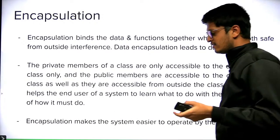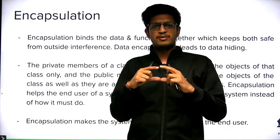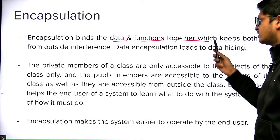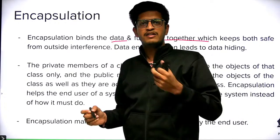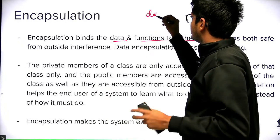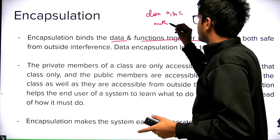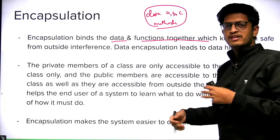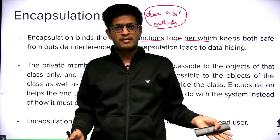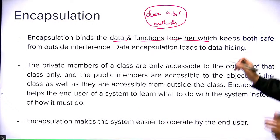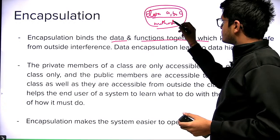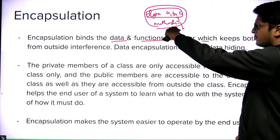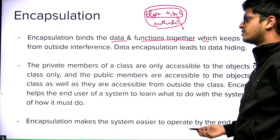Let's look at encapsulation. The process of binding the data and methods together into one class is called encapsulation. This binding should be meaningful — you should have some data and some methods which are applicable to that data, which do some processing and return some output. The process of binding this together into one single unit is called encapsulation. Through encapsulation, you can achieve data hiding.